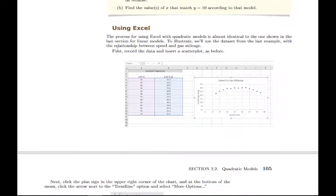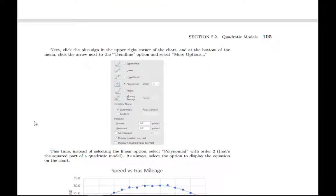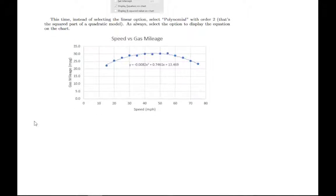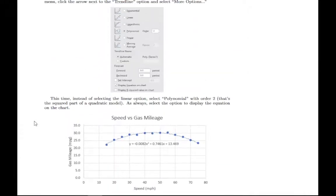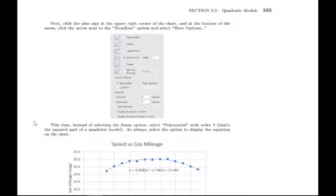And then here at the end, I have a little description of how to use Excel to do the same thing, if you'd like to use Excel instead of your graphing calculator. And then, of course, you can use Desmos in the same way that we did in section 2.1. So that's about it for 2.2. There's not a lot of new stuff other than this new formula, but the process and the principles are very similar to what we did with linear models in section 2.1.